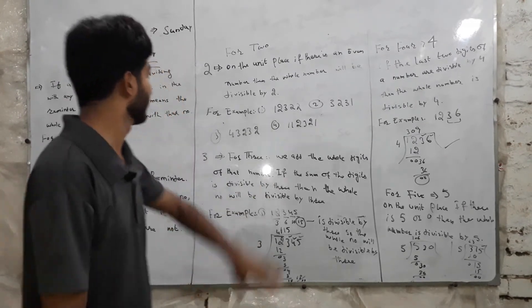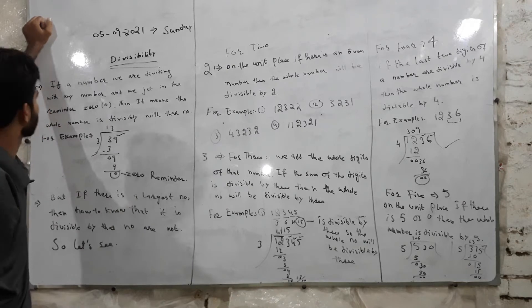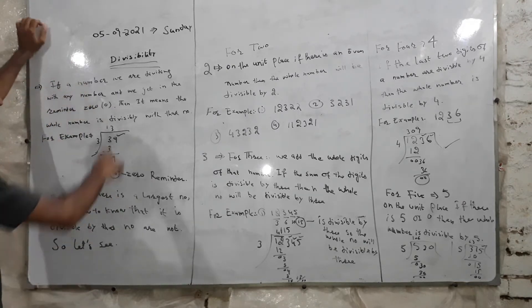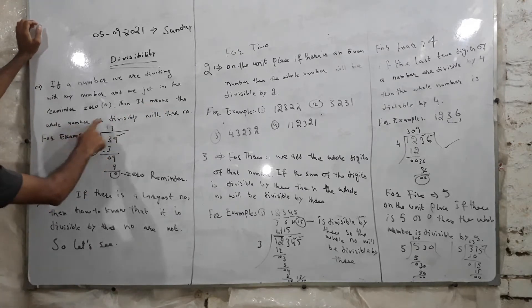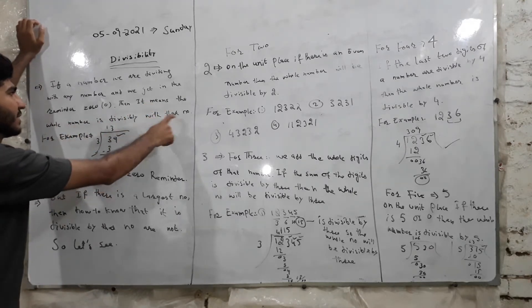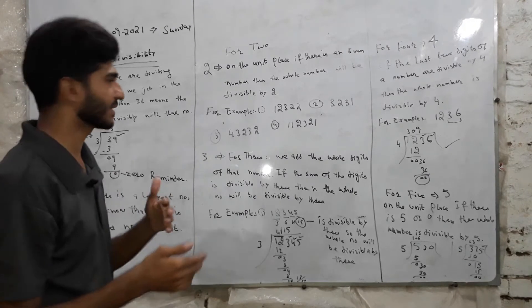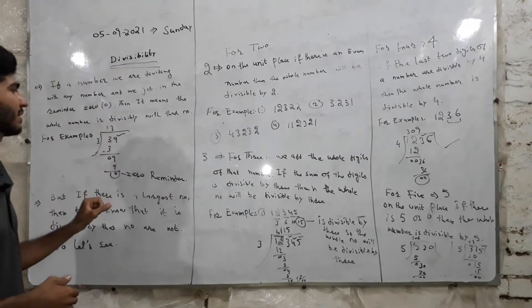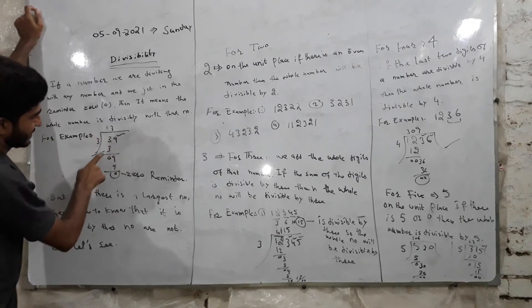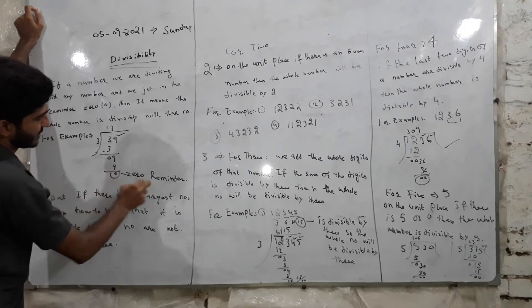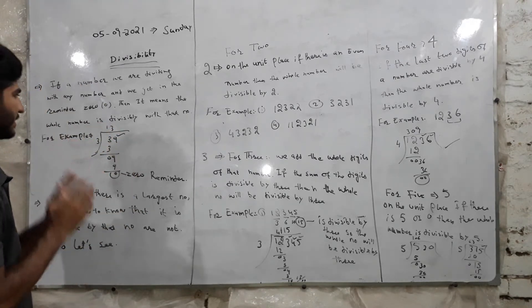Today's basic topic is divisibility, which is a 6th or 7th class topic. What is divisibility? If we are dividing a number by any number and we get a remainder of 0, then it means that the number is divisible by that number. For example, if we divide 39: 3 times 1 is 3, 3 times 3 is 9 — remainder is 0, so 39 is fully divisible.